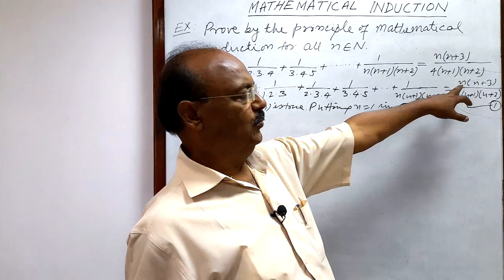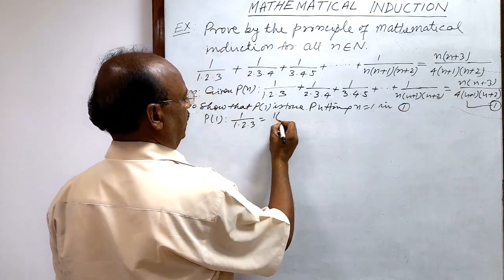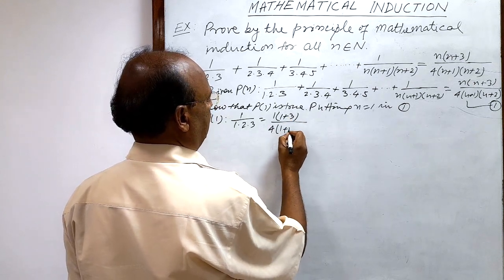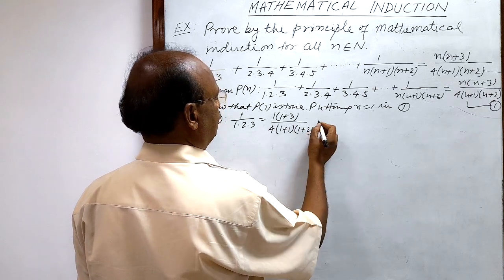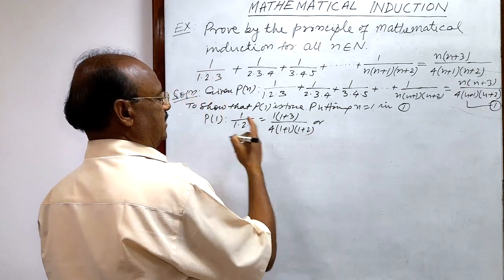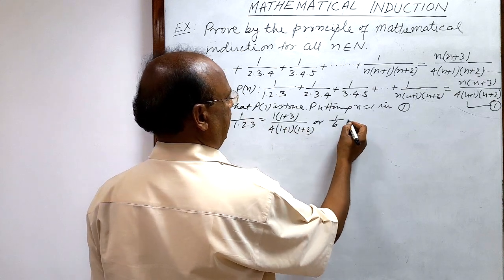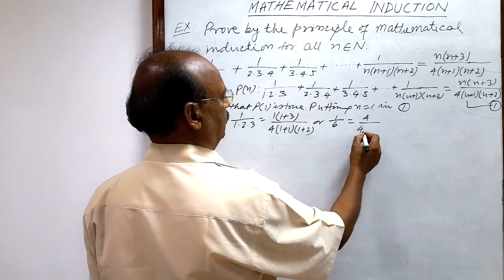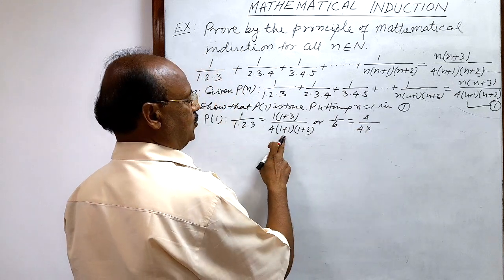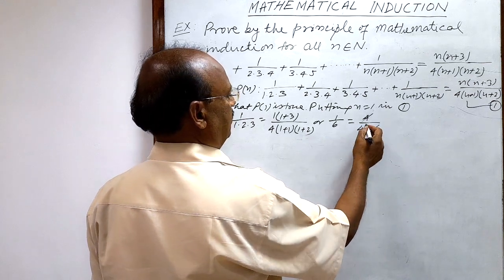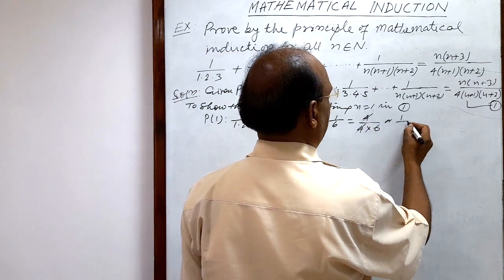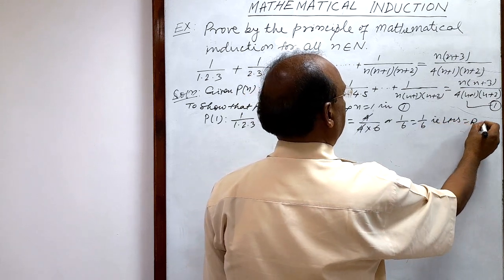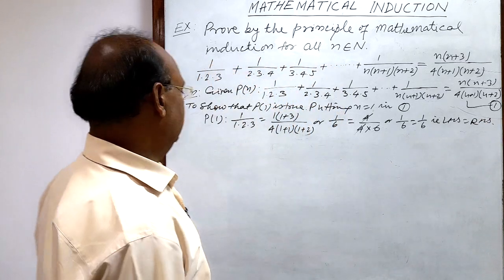On the right-hand side, putting n = 1 gives 1·(1+3) / [4·(1+1)·(1+2)] = 4/(4·2·3) = 4/24 = 1/6. The left-hand side is also 1/6. So LHS = RHS, and therefore P(1) is true.